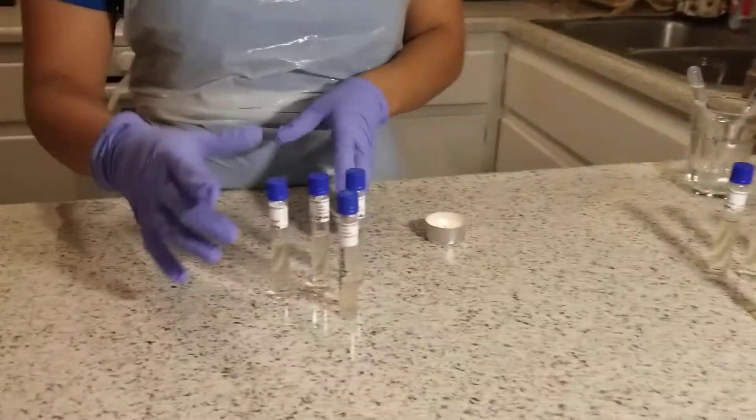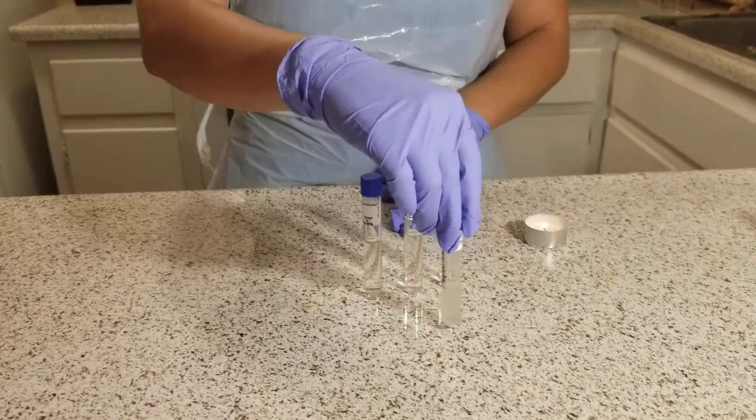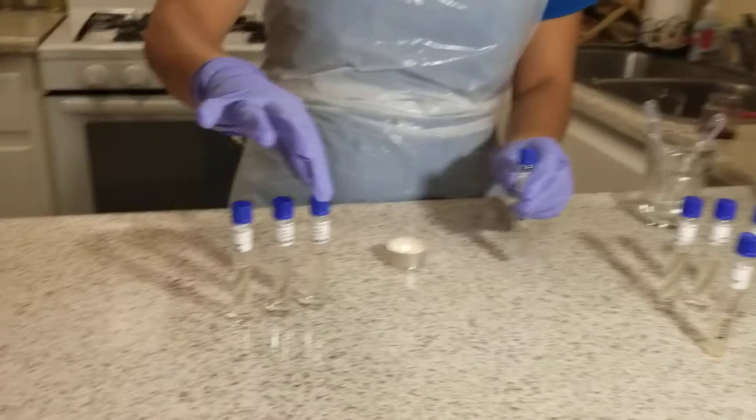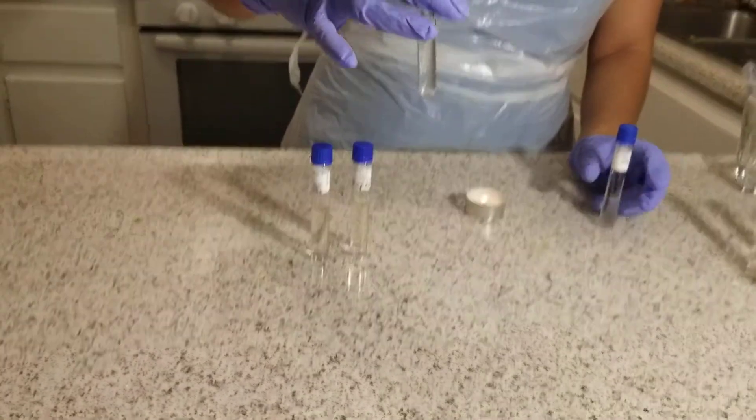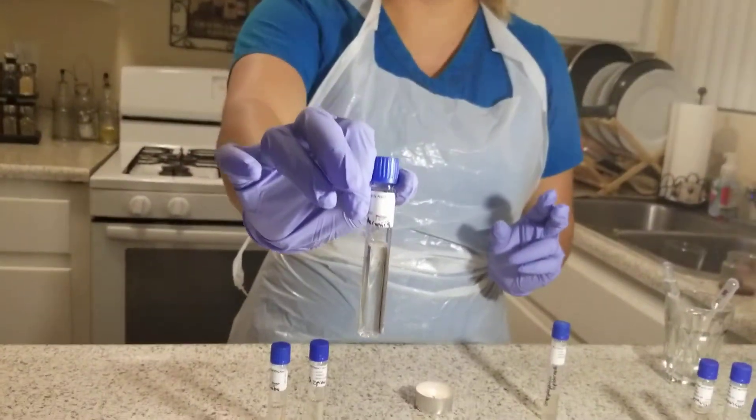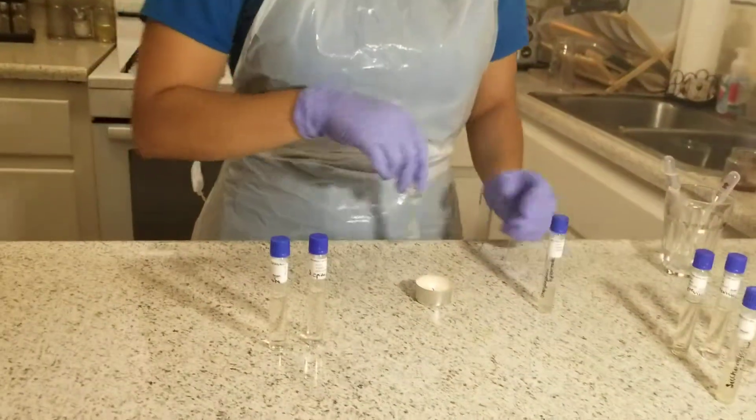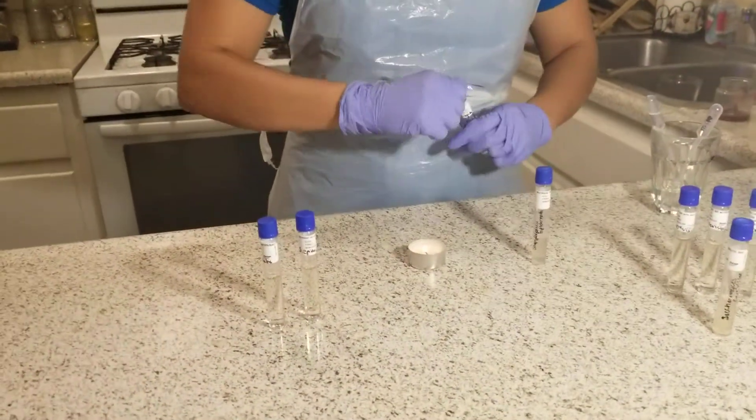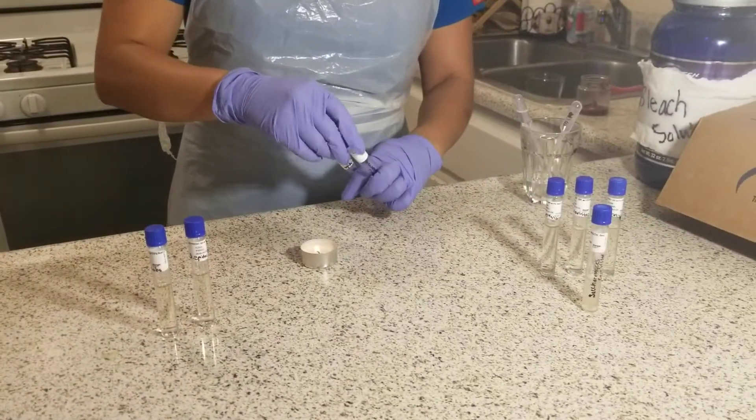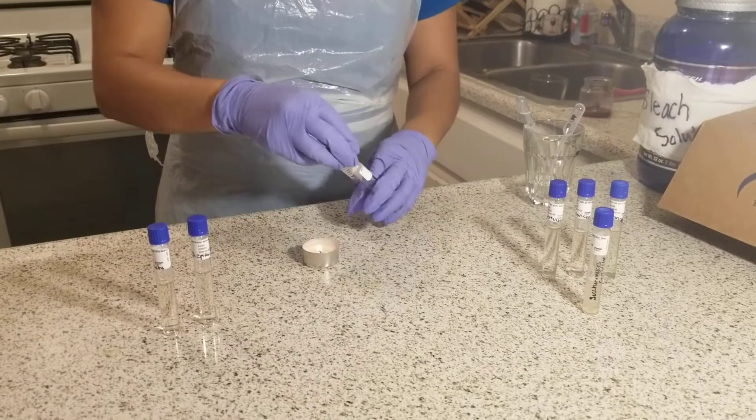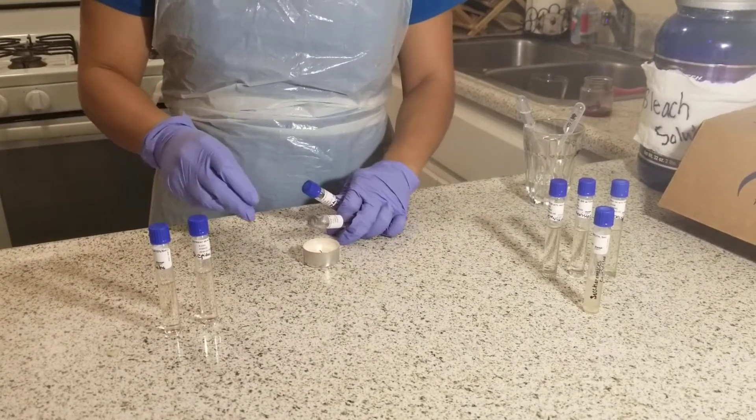Now I'm going to demonstrate how I did that with my Staphylococcus epidermidis. First, I'm going to grab my 1% sodium chloride tube. Then I will take my culture vial of the bacteria and sterilize the lid.